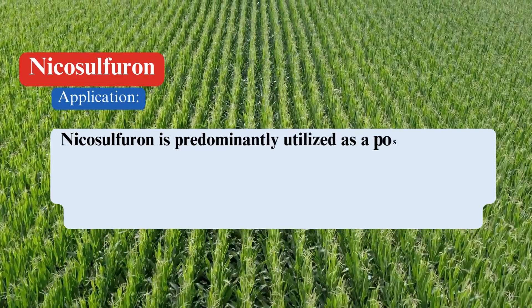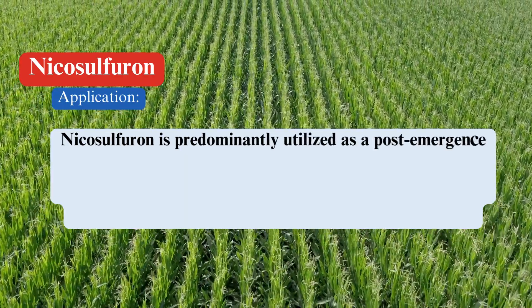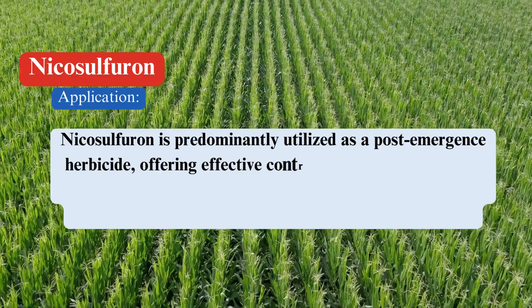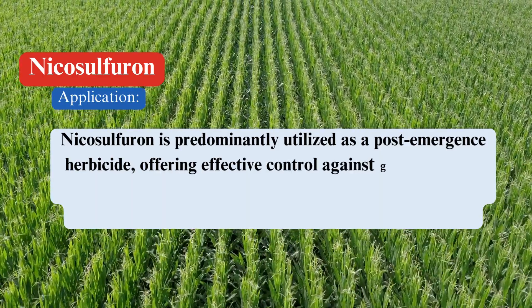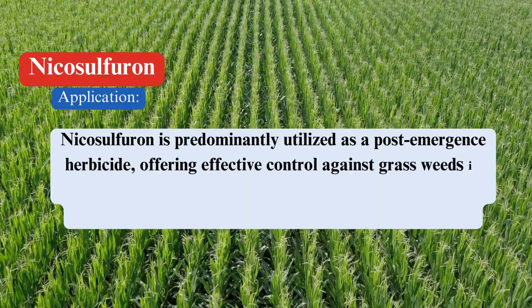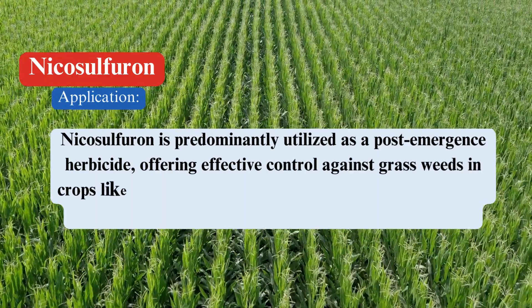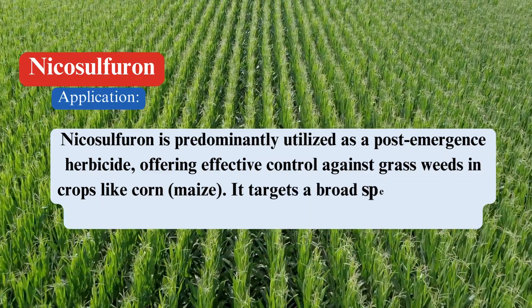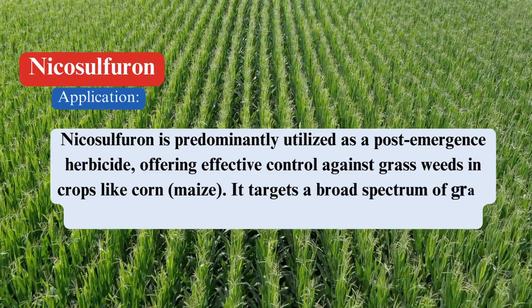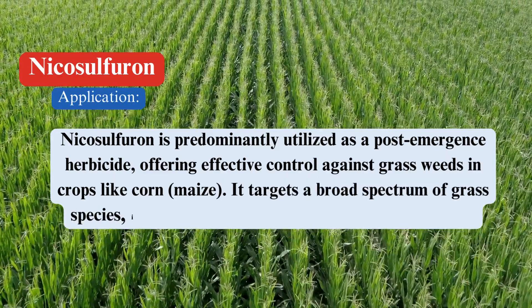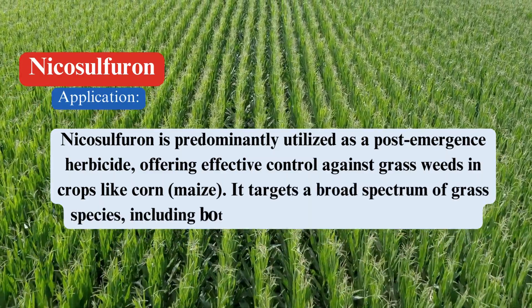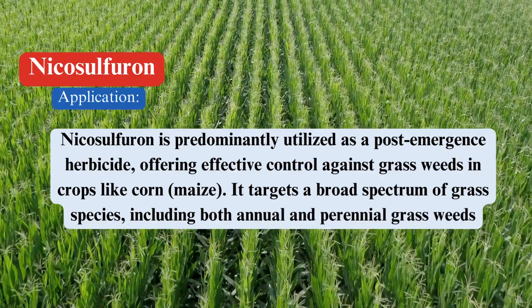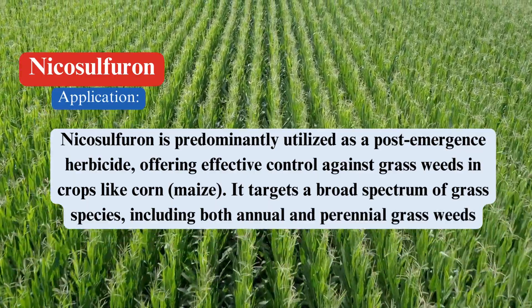Nicosulfuron is predominantly utilized as a post-emergence herbicide, offering effective control against grass weeds in crops like corn and maize. It targets a broad spectrum of grass species, including both annual and perennial grass weeds, thereby aiding in the management of weed infestations and promoting crop growth and yield.